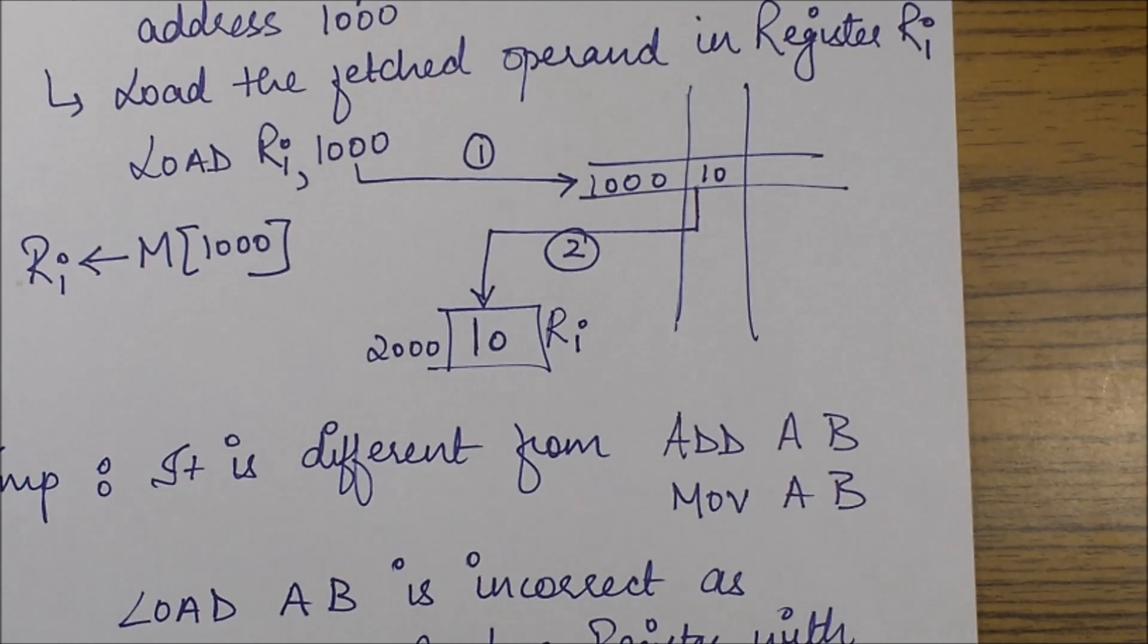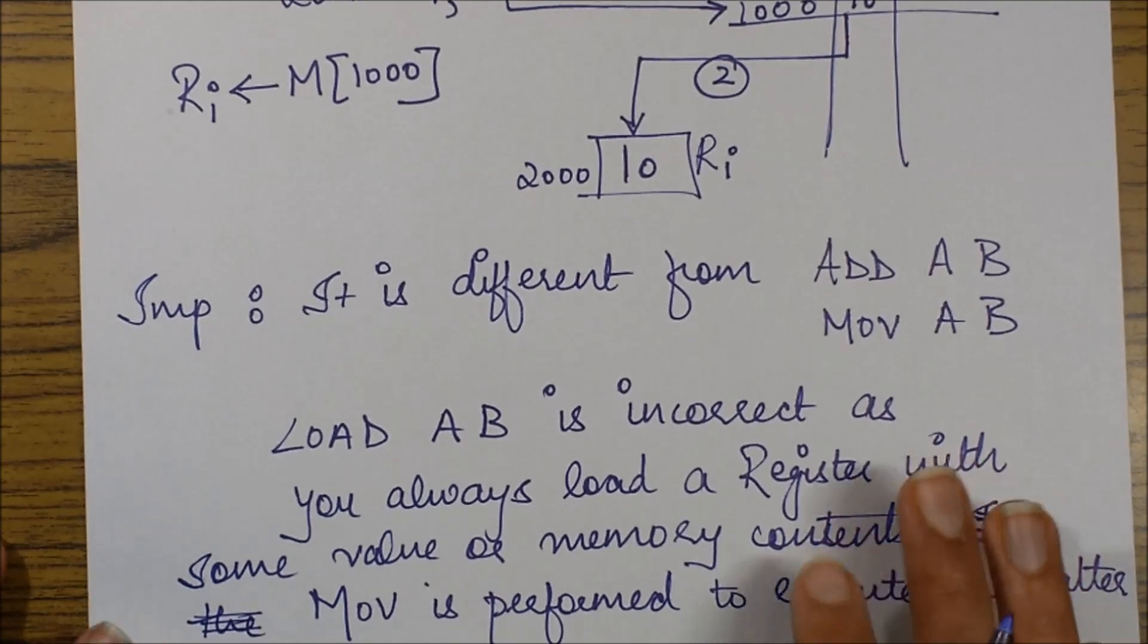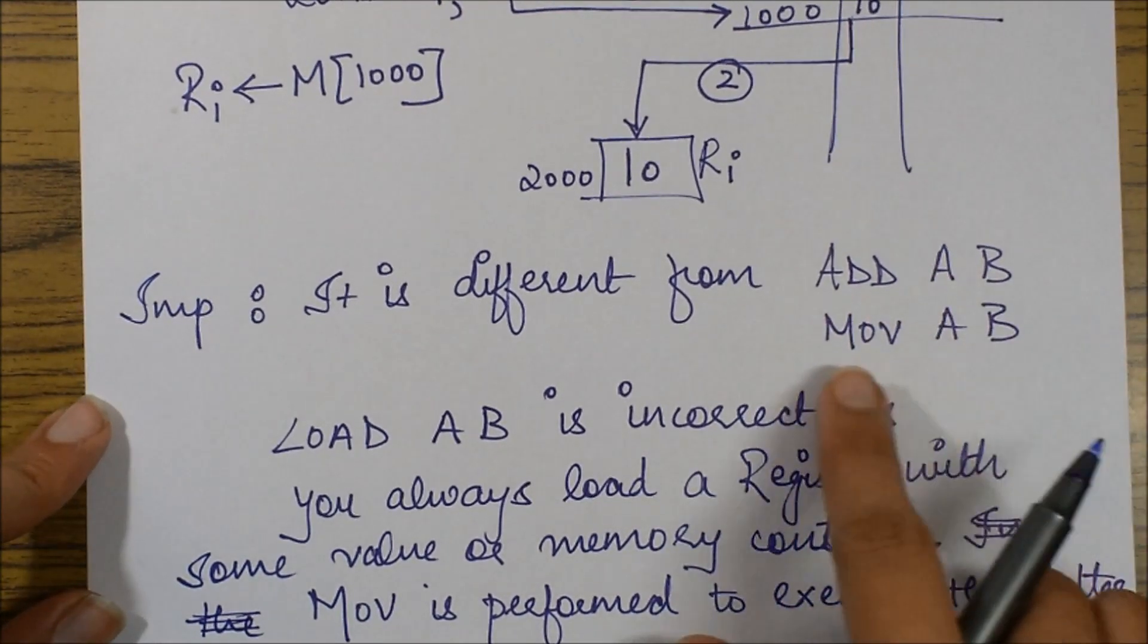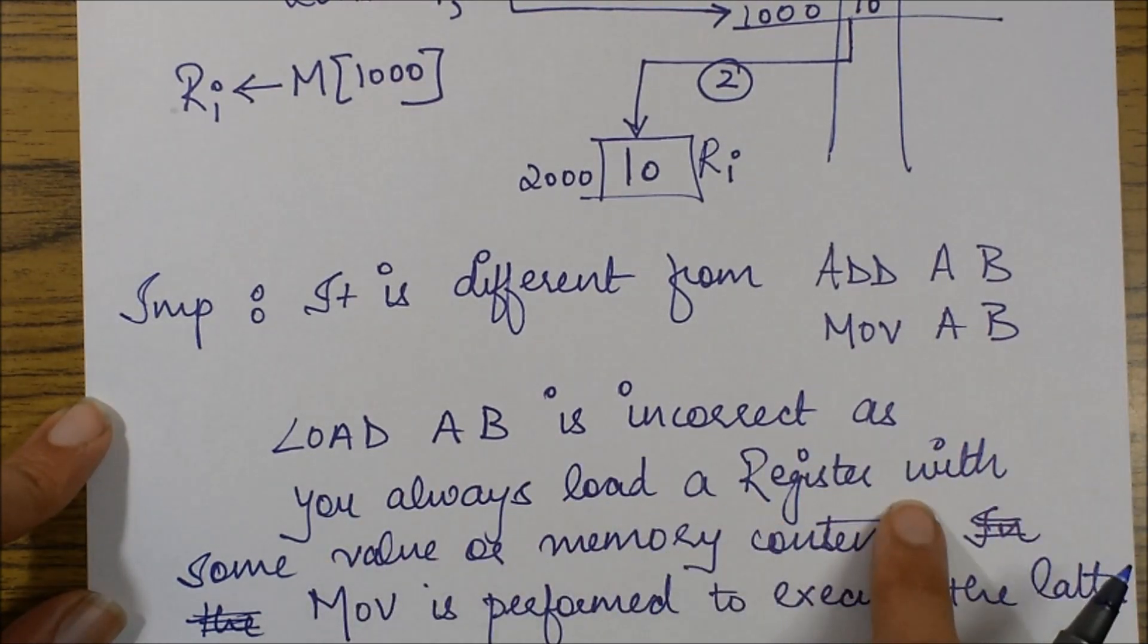The important points which can be noted down and which can be differentiated over here are that it is different from add AB or move AB. Load AB is incorrect as you always load a register with some value or memory contents.